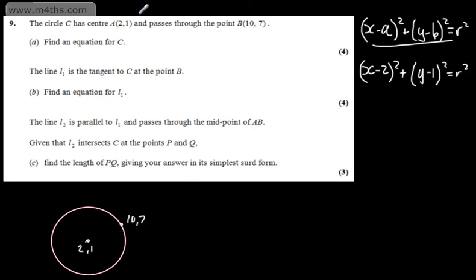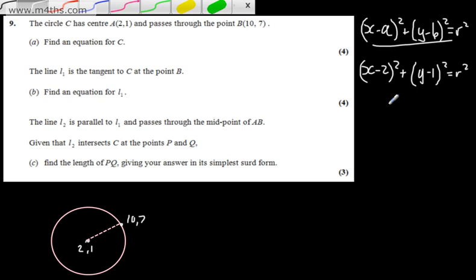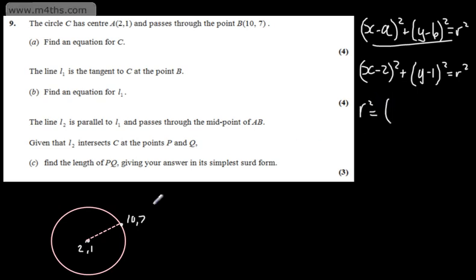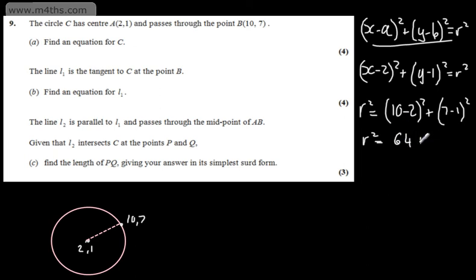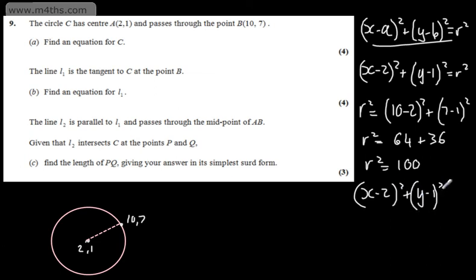We can use the distance formula to find r². So the radius squared is going to be (10 − 2)² + (7 − 1)², which gives us 8² + 6² = 64 + 36 = 100. So r² = 100, and our circle equation is (x − 2)² + (y − 1)² = 100, giving centre A(2, 1) and a radius of 10 units.